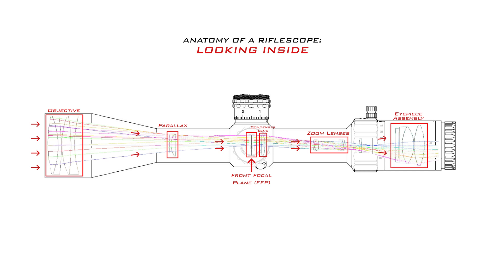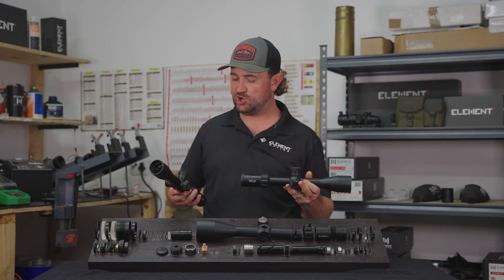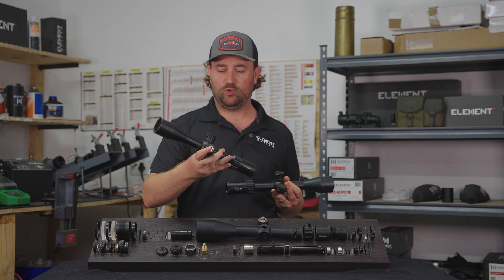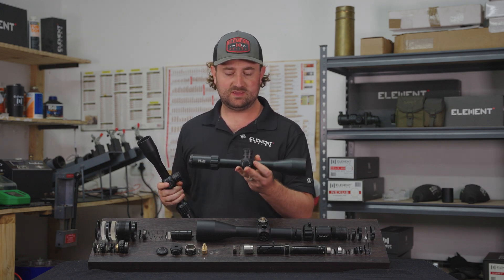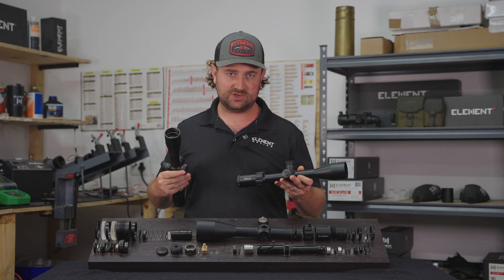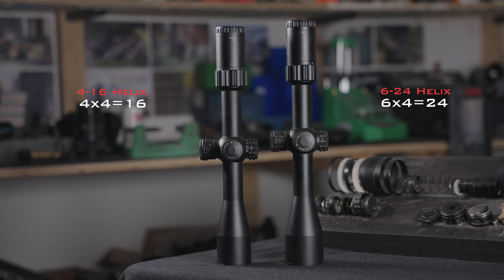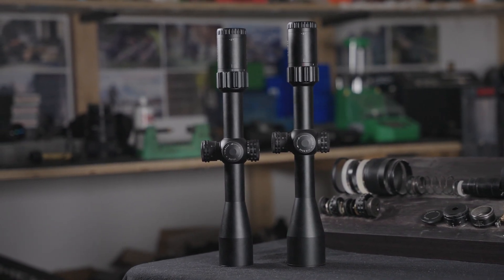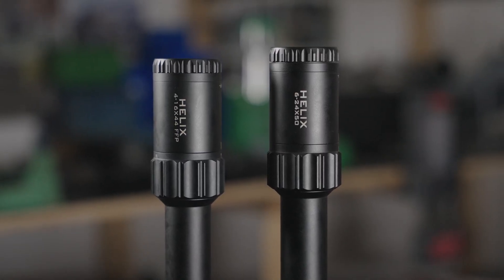But which lenses are actually responsible for magnifying an image? The best way to answer this is to compare two riflescopes in the same family with the same erector systems: a 4-16x44 Helix and a 6-24x50 Helix. Both have a 4x erector system, meaning the base magnification is multiplied by 4 when the zoom cells move in and out. This is why these models can be priced so similarly — they share very much the same components aside from the objective.